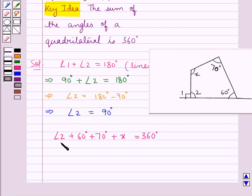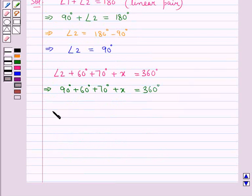Now this implies 90 degrees plus 60 degrees plus 70 degrees plus x is equal to 360 degrees. Therefore x plus 220 degrees is equal to 360 degrees.